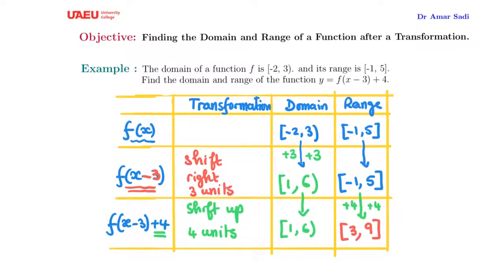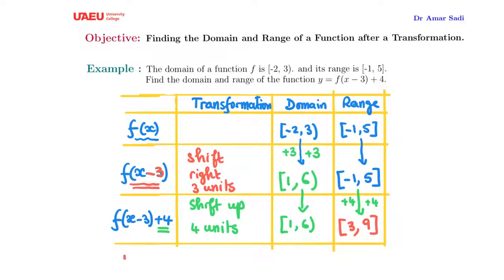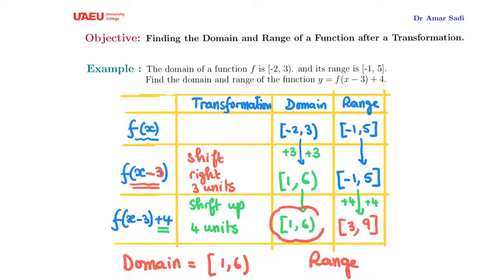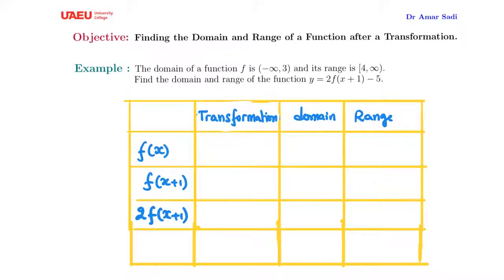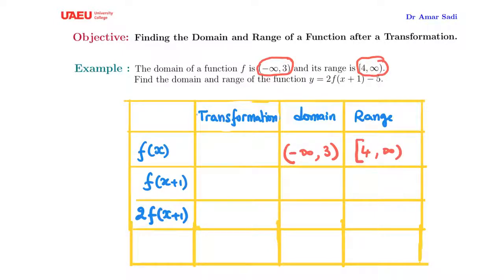After these two transformations, the domain of the new function is [1, 6] and the range is [3, 9]. For the next example, we start with a function whose domain is (-∞, 3] and its range is [4, ∞). We want to find the domain and range of the function 2f(x + 1) - 5.